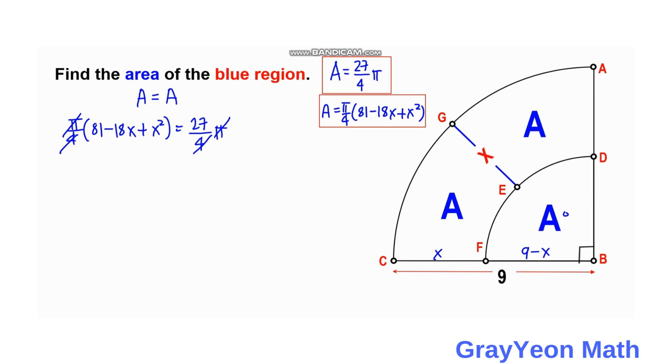So we have X squared minus 18X plus 81 equals 27. So we can subtract 27 on both sides, negative 27 and negative 27.